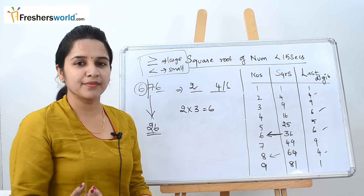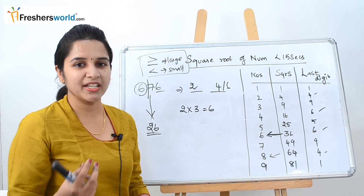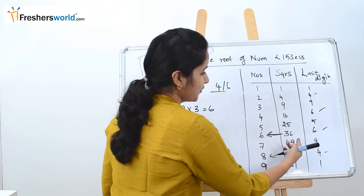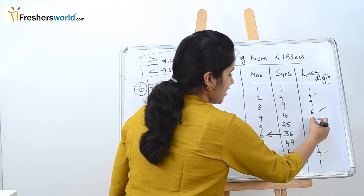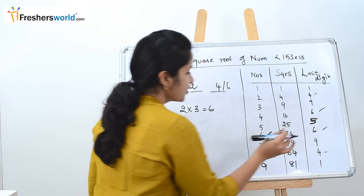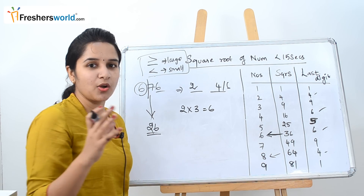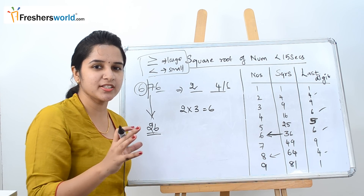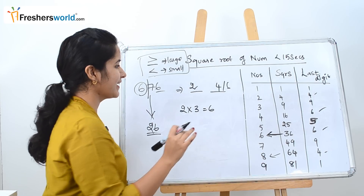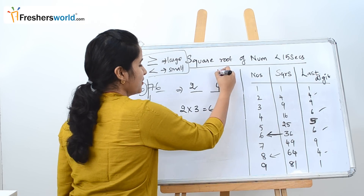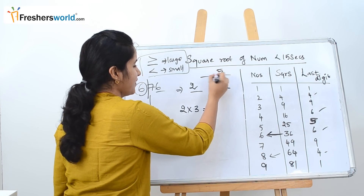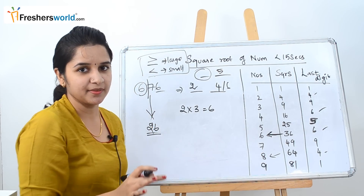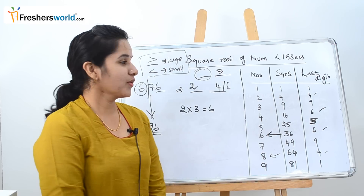If the given number ends in 5, note that 5 appears only once in the last digit column. So you don't need to choose between a smaller or larger number — you directly write the unit digit as 5 and then find the first digit using the same method.